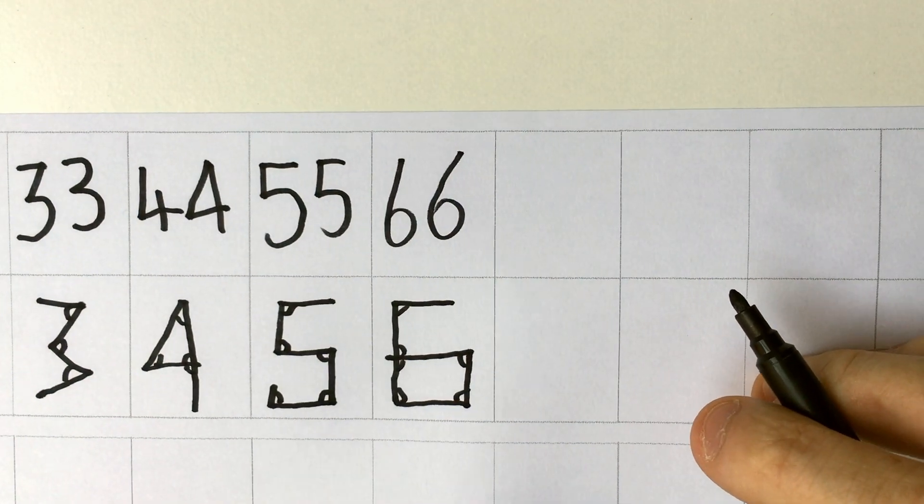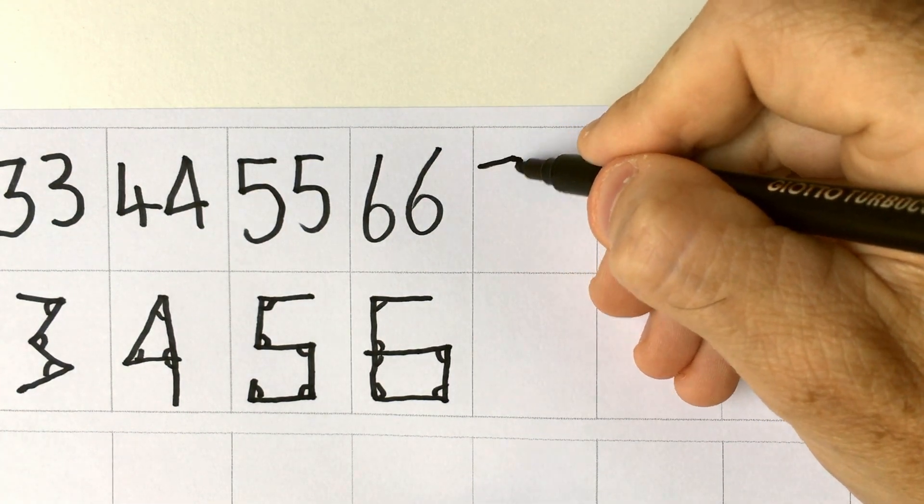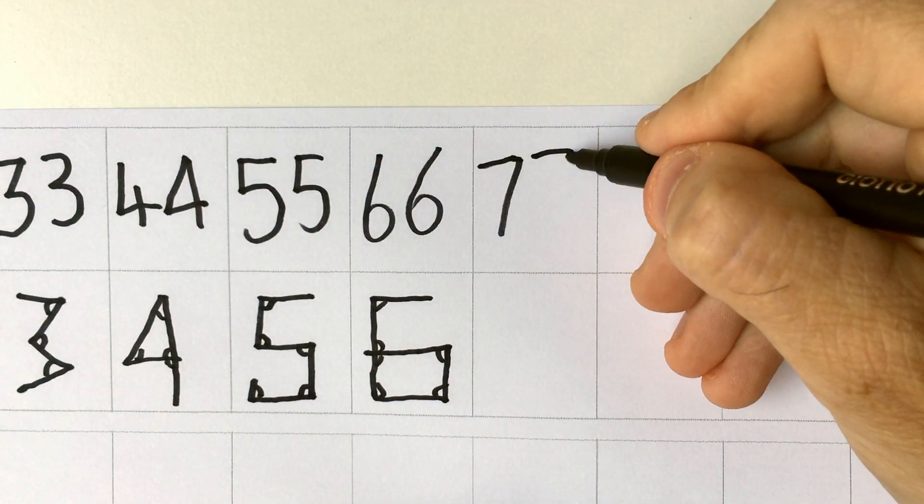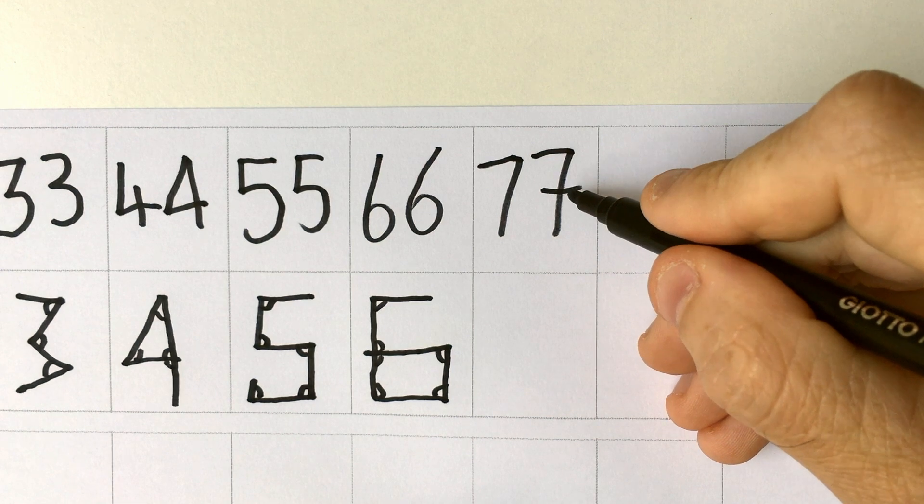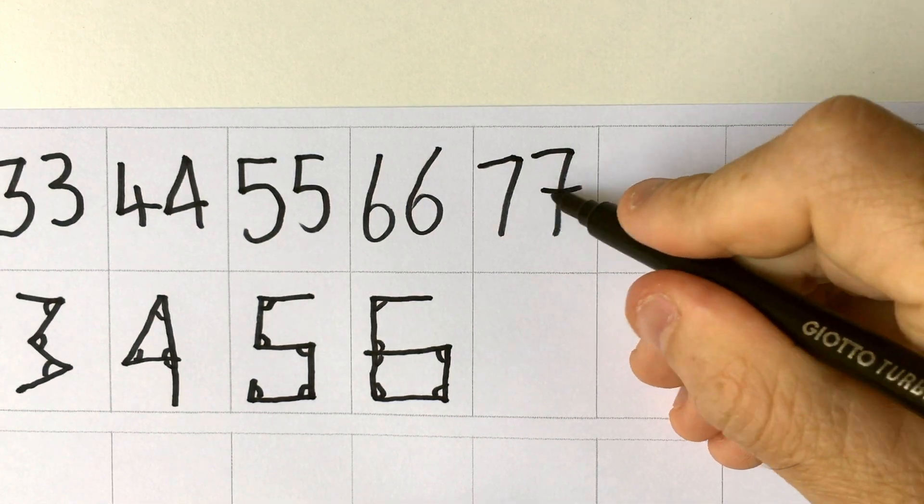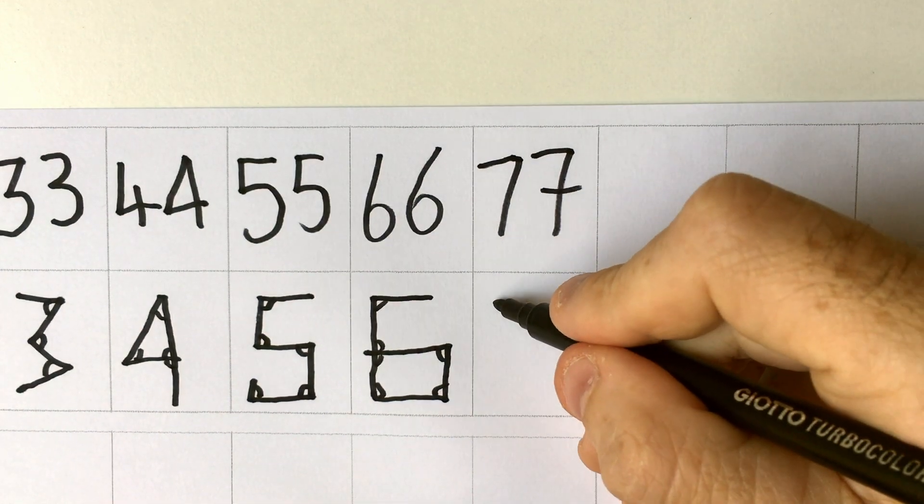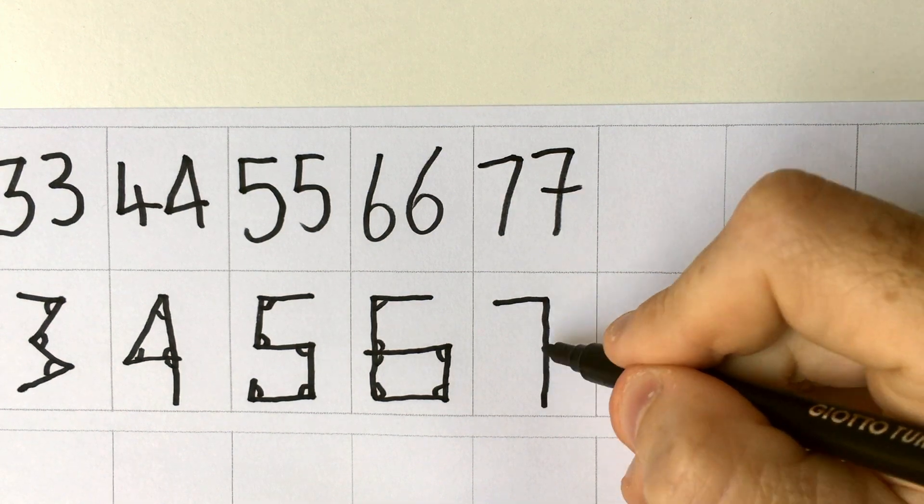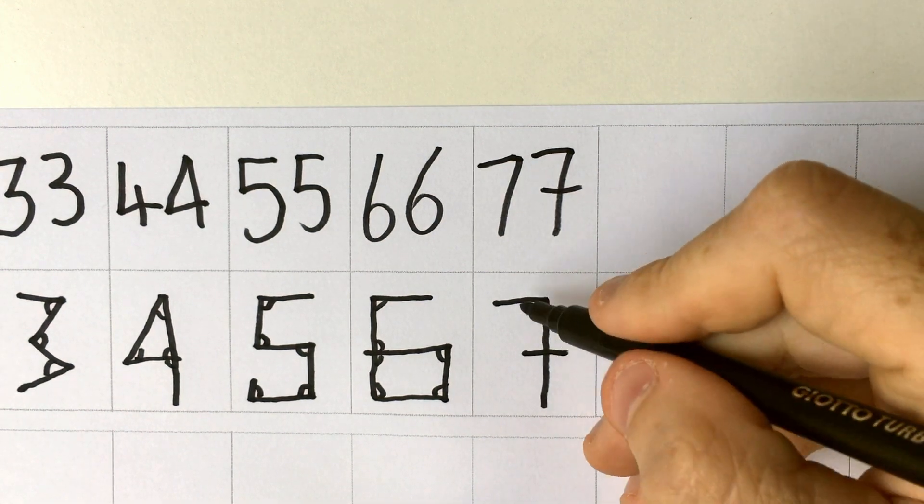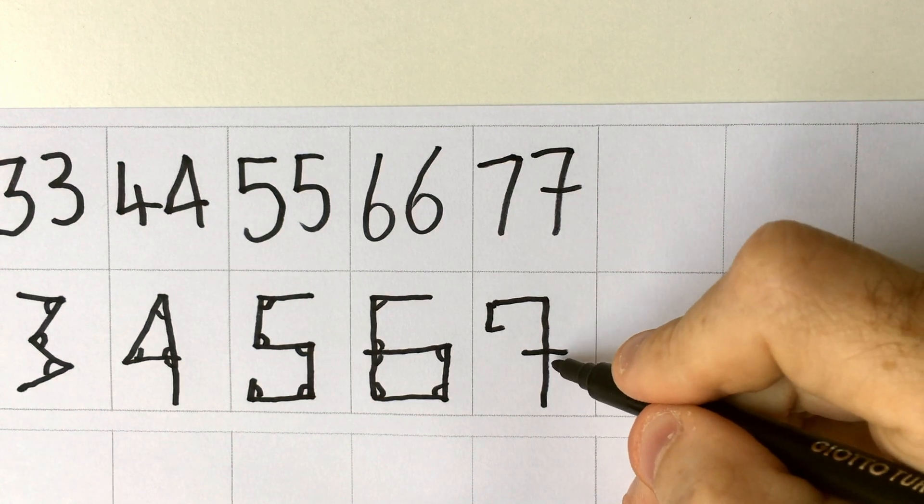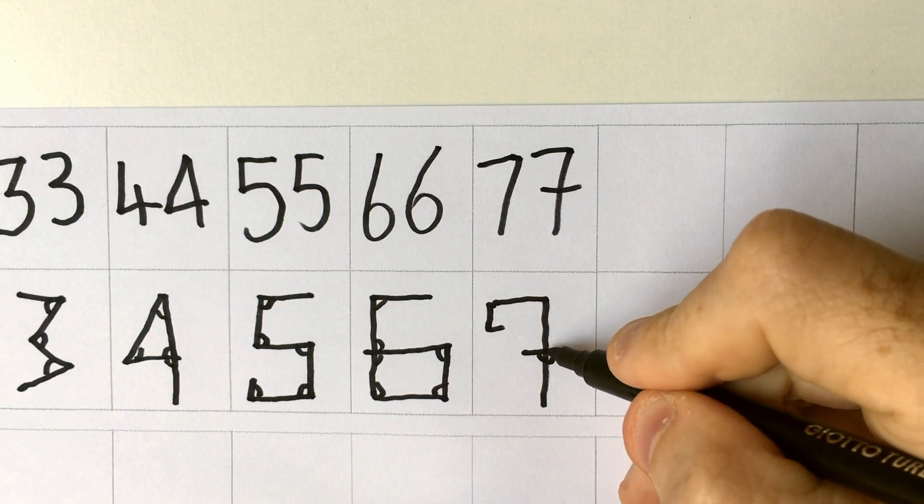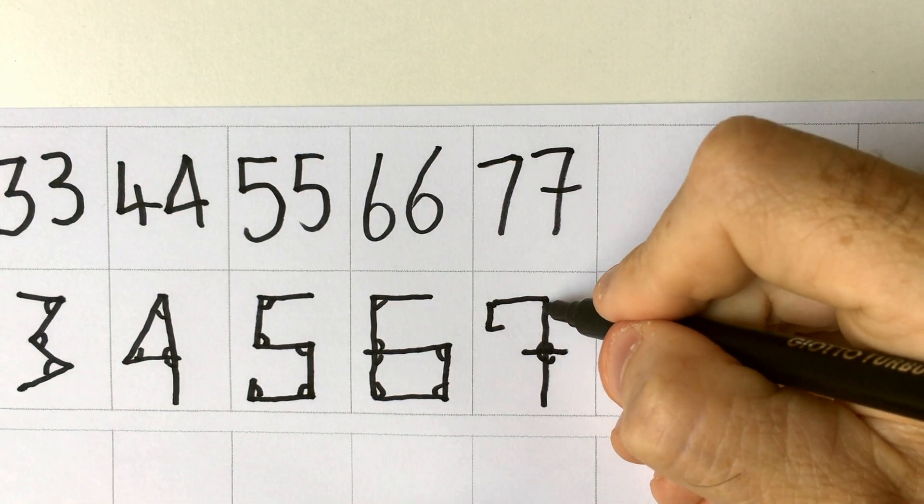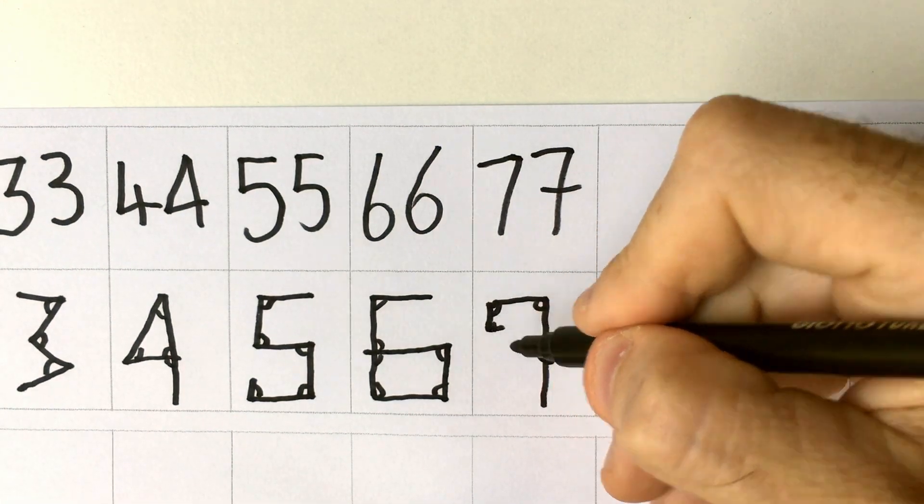Seven. I've seen sevens like this, or sevens like this. So this is interesting here, the line which goes through the seven. One, two, three, four, five, six, seven.